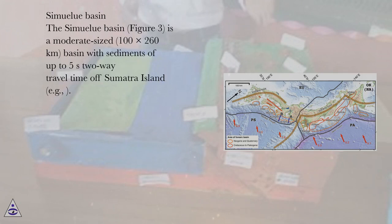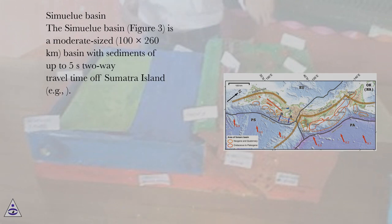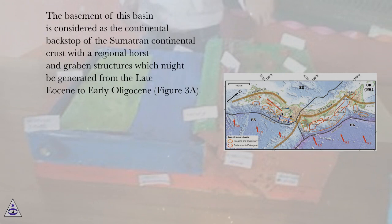The Simulu Basin, figure 3, is a moderate-sized, 100x260km basin with sediments of up to 5 seconds two-way travel time off Sumatra Island. The basement of this basin is considered as the continental backstop of the Sumatran continental crust with a regional horst and graben structures which might be generated from the late Eocene to early Oligocene, figure 3a.